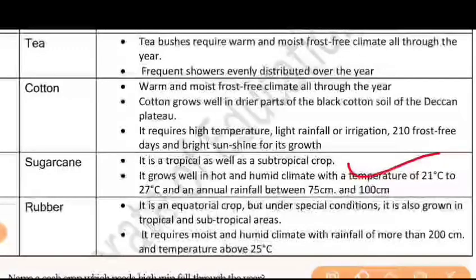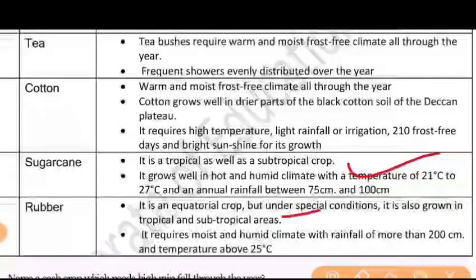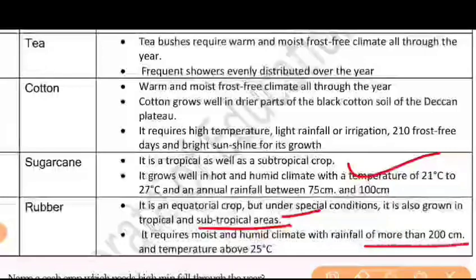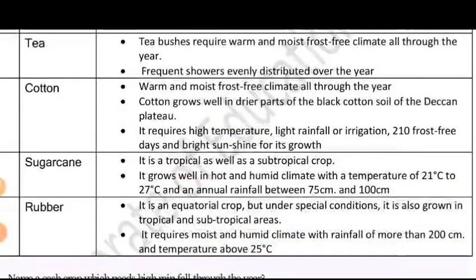Let's talk about rubber. It is an equatorial crop, but under special conditions it is also grown in tropical and subtropical regions. It requires moisture, a humid climate, and a lot of rainfall. The most important thing is the coastal regions — for example, coastal areas where rainfall is very high.